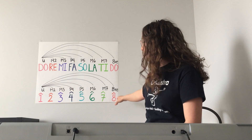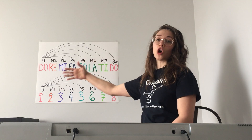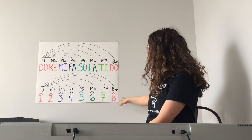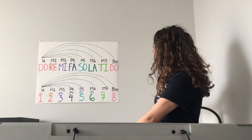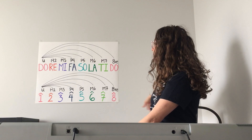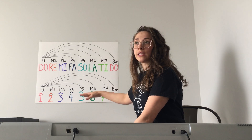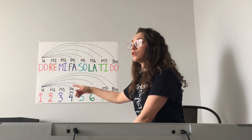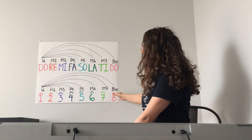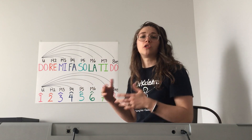Now let's do it with the scale degrees. You'll notice that eight and one are the same note — they're both Do but just an octave apart. So if you kept going this would just repeat: the eight can also be called a one. Because we're only singing one octave, we're going to call it an eight, but I want you to know they're the same thing — one and eight both mean Do.